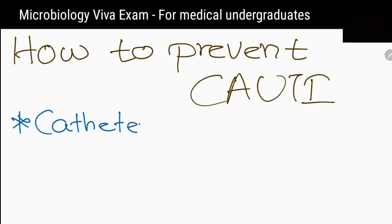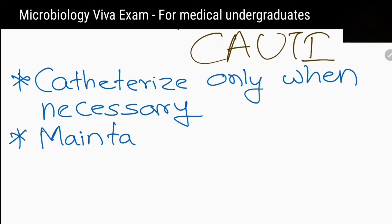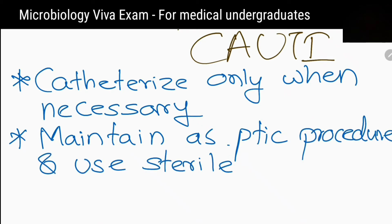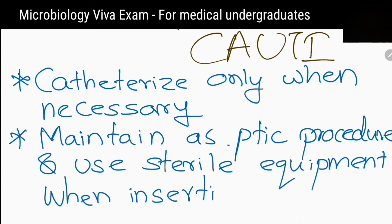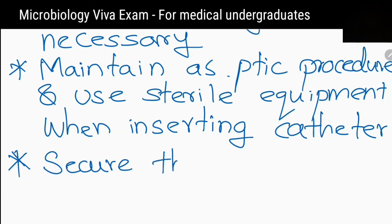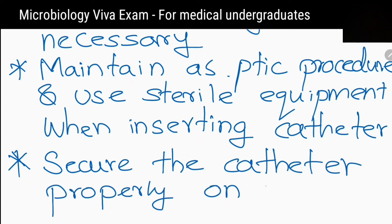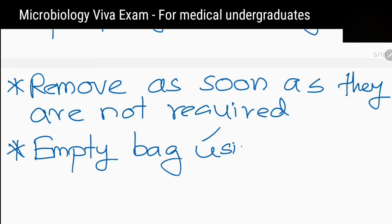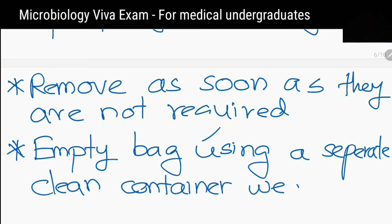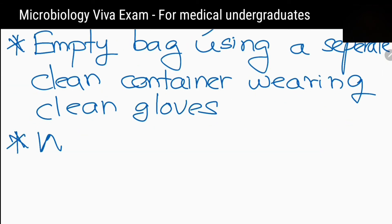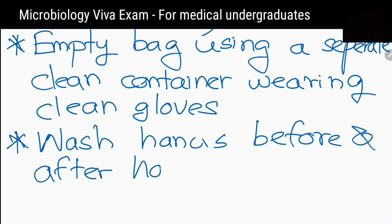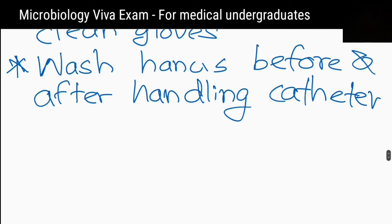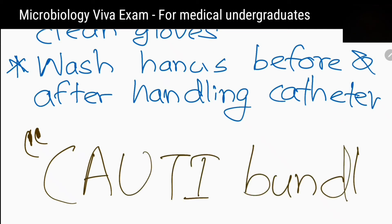How to prevent catheter-associated urinary tract infections? Catheterize only when necessary. Maintain aseptic procedures and use sterile equipment when inserting the catheter. Secure the catheter properly. Maintain a closed and gravity drainage system. Daily review of the need for the catheter and remove as soon as it is not required. Empty the bag using a separate clean container wearing clean gloves. Wash hands before and after handling the catheter. The single name given to all these preventive measures is the catheter-associated urinary tract infection bundle.